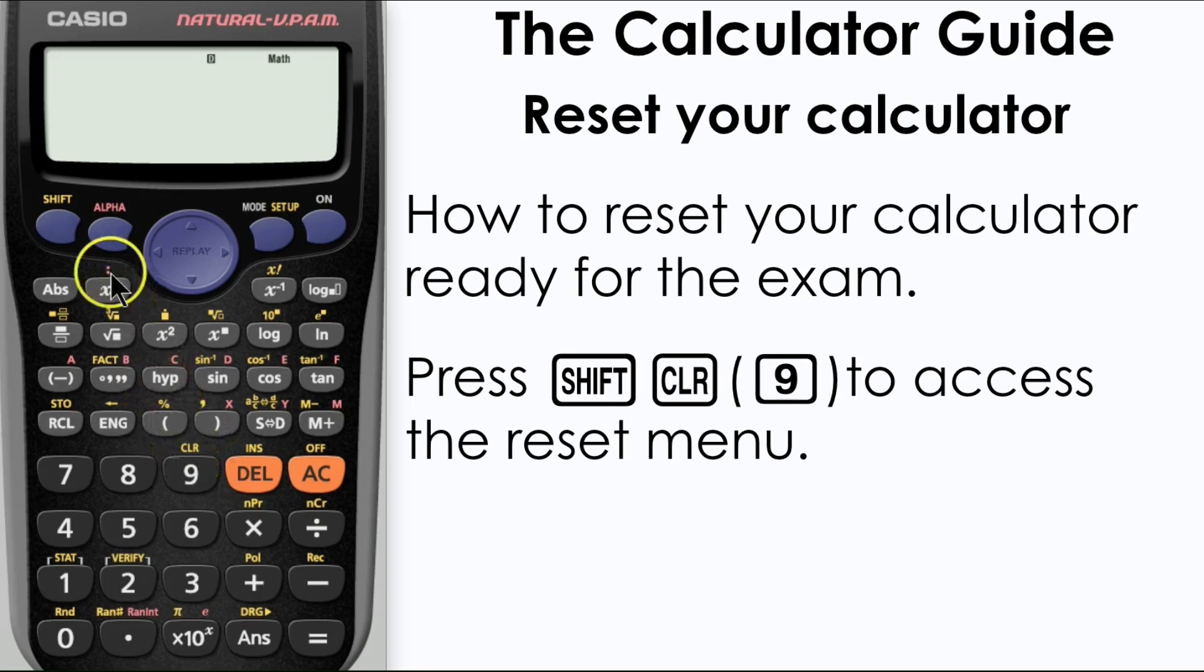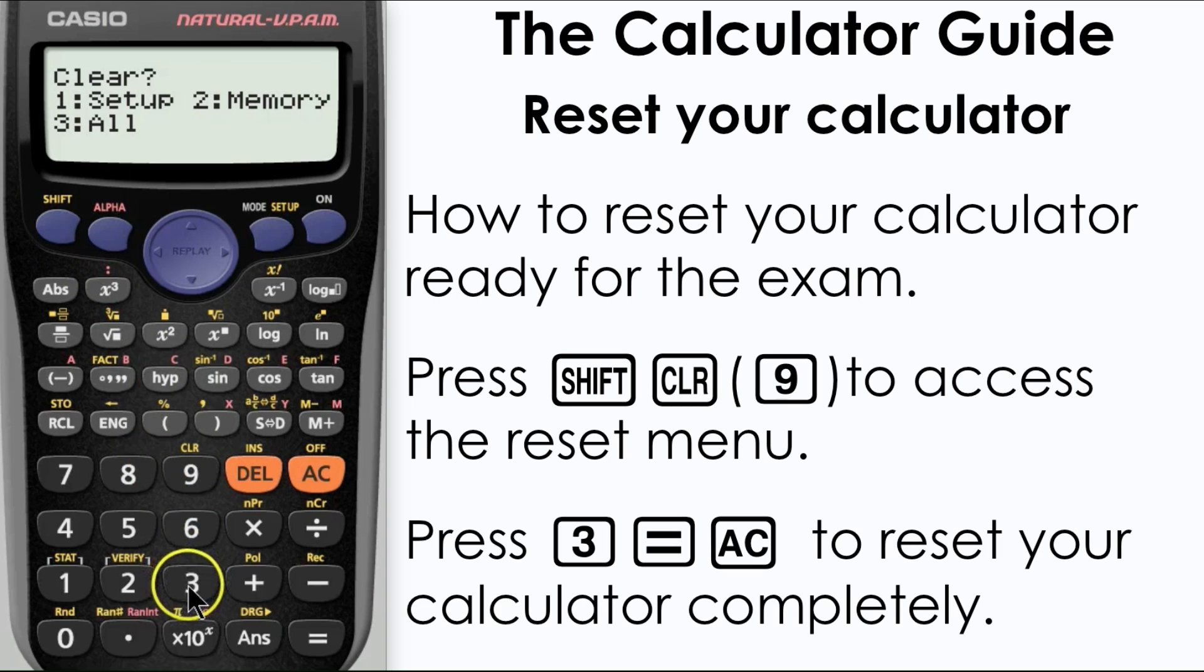We're going to access the clear menu, so press Shift, then 9, and that gives you the clear menu. Press 3, equals, and then AC, and that's completely cleared your calculator's memory ready for the exam. The only complication that may come with this is if you don't use the regular Math display mode or Natural display mode.